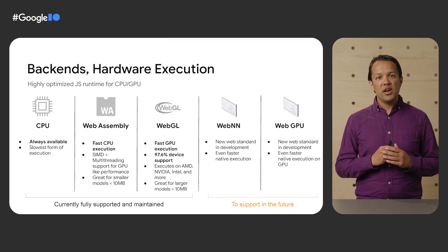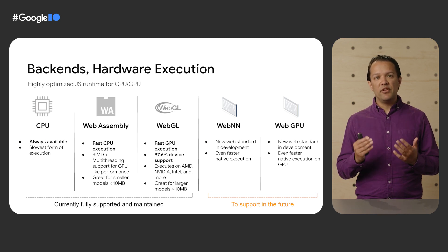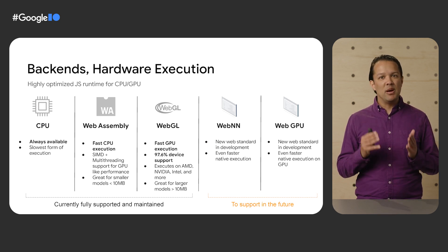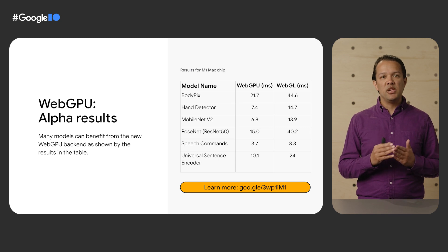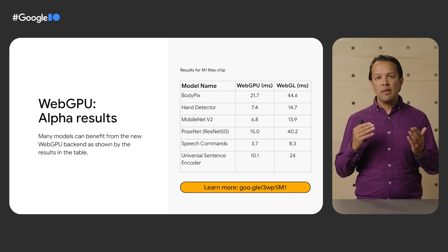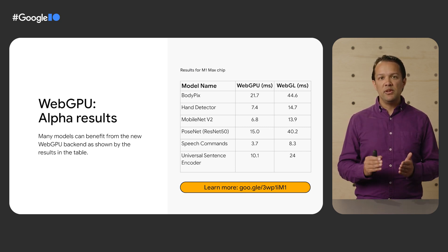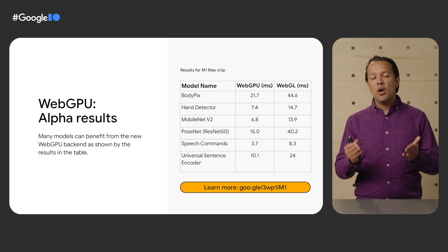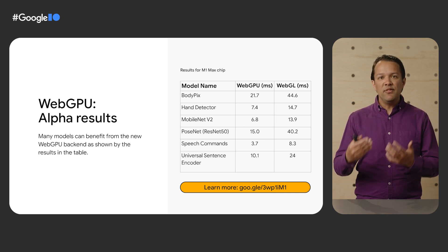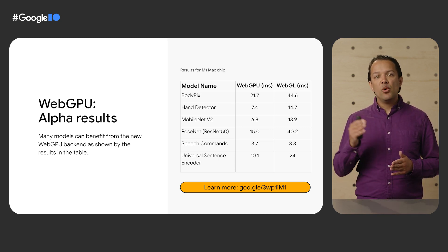Finally, looking towards the future, we're seeing new web standards being formed — namely WebNN and WebGPU — which we're also investigating to accelerate performance even further. Today, we're pleased to announce that the TensorFlow.js WebGPU backend is now available in alpha form. Many existing models will get a boost by running on WebGPU, like our BodyPix segmentation model, which previously took 44.6 milliseconds to run on WebGL, but now takes just 21.7 milliseconds to run on WebGPU on the same machine. We encourage you to try your models on this new backend. For now, you will need to enable a browser flag to try this alpha feature out — more details are provided on the link shown.